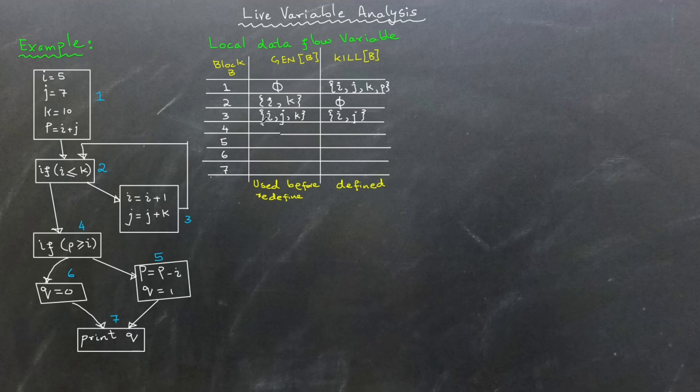By now, I hope you have a clear understanding of gen and kill sets. These sets form the basis for live variable analysis. To save time, I will now quickly compute the gen and kill sets for all 7 basic blocks. The next step is to initialize the global data flow variables in b and out b as empty sets for every basic block b.